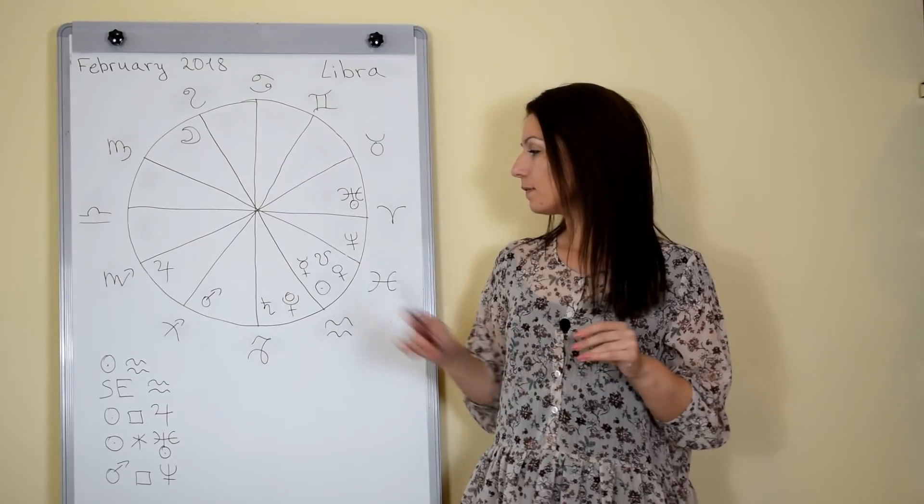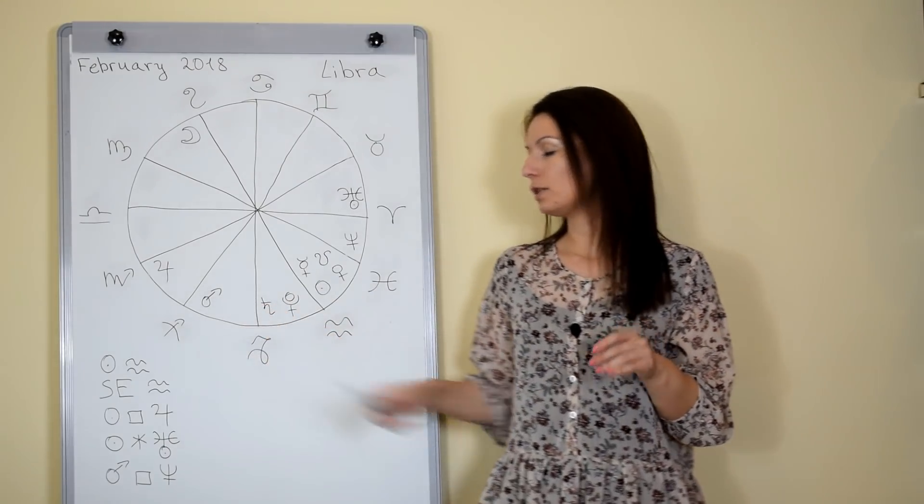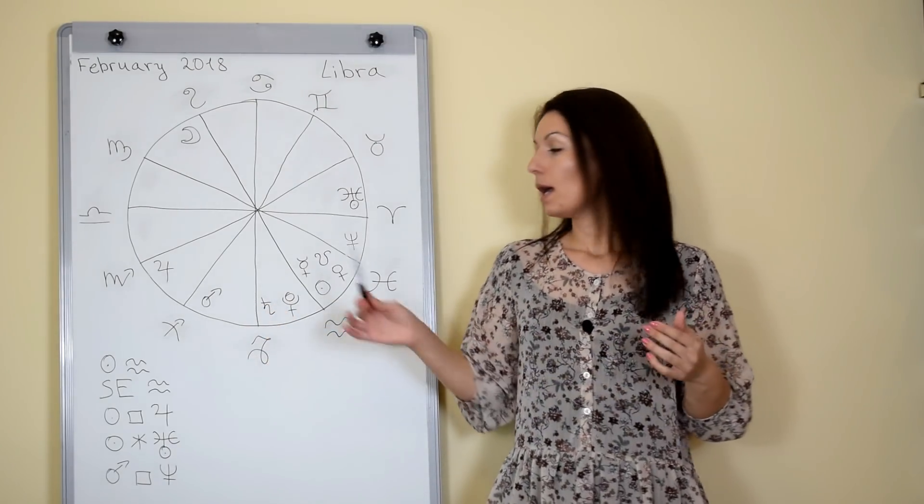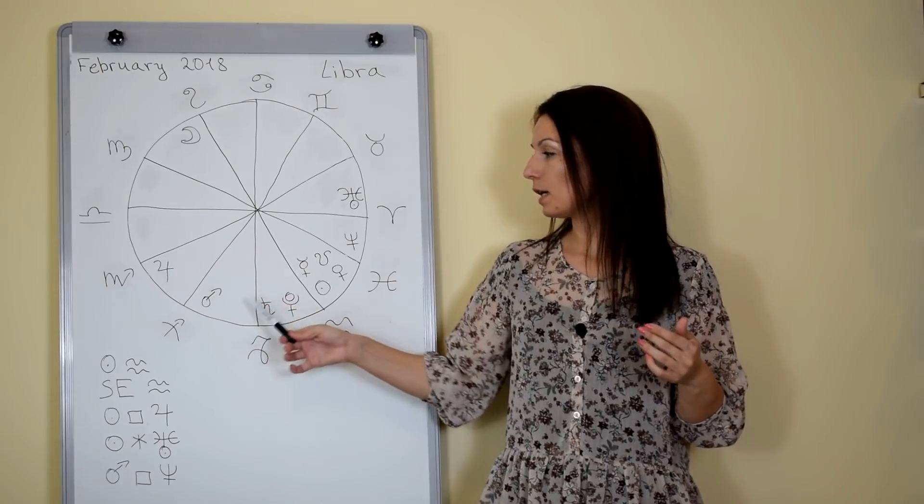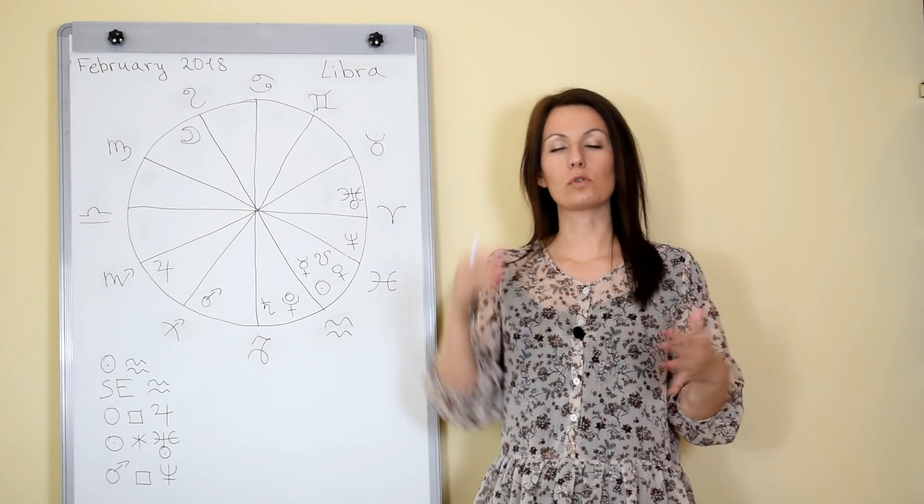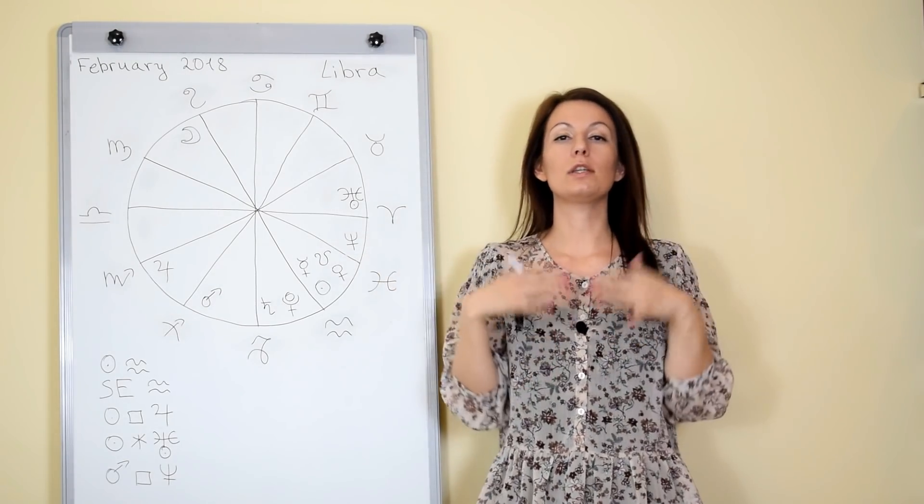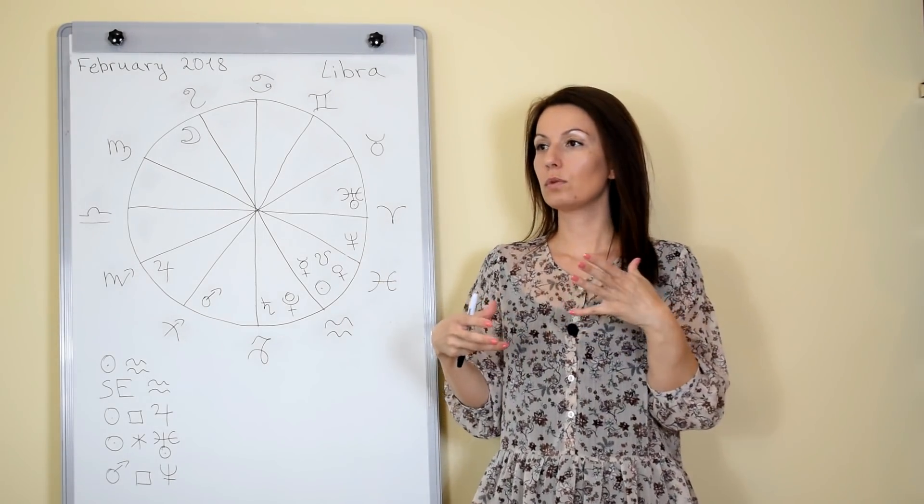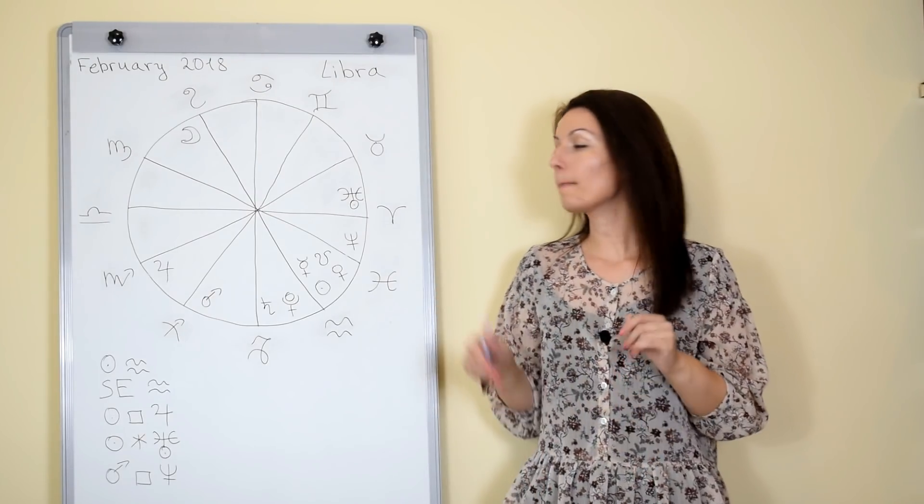The next thing that we have is Mars which will be in Sagittarius during the whole month and Mars in Sagittarius actually will make sextile with your sign. This is a supportive aspect which can help you also to be a little bit more initiative, more focused on doing something.